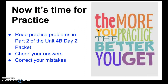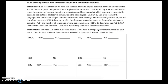Now it's time to practice. Redo the practice problems in part two of the unit 4B day two packet, check your answers, and correct any mistakes. Remember, the more you practice, the better you get. In part two, for these structures you have to draw the Lewis dot structures first and then determine the number of electron domains and number of lone pairs. Check your answers and correct your mistakes. That's it for this video — have a quality day.